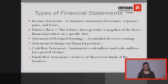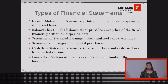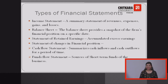The third type of statement is the statement of retained earnings. This statement shows us the accumulated excess earnings of a business enterprise. Excess earnings means earnings over our expenses, over dividends and over losses. When we subtract all these losses, expenses and dividend payments from our total incomes, what we get is retained earnings, and the statement which shows retained earnings is called the statement of retained earnings.